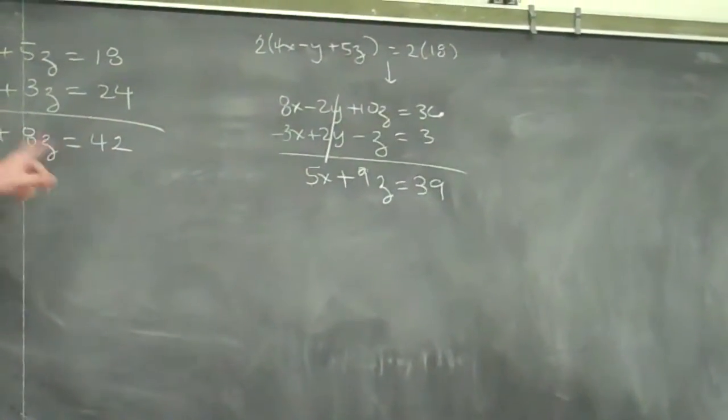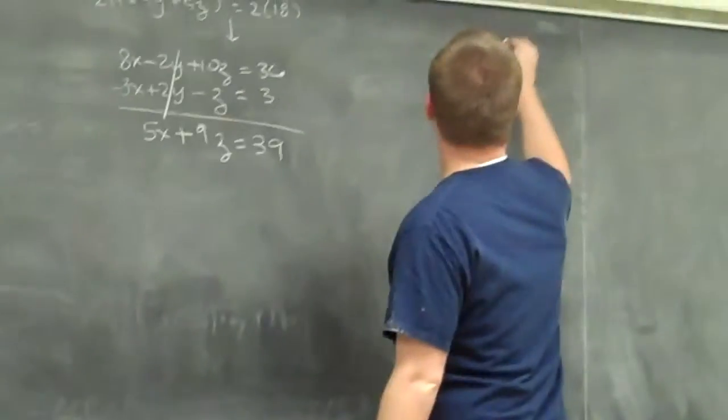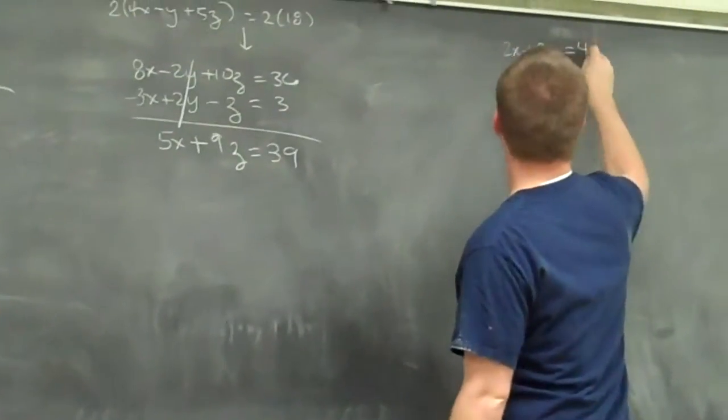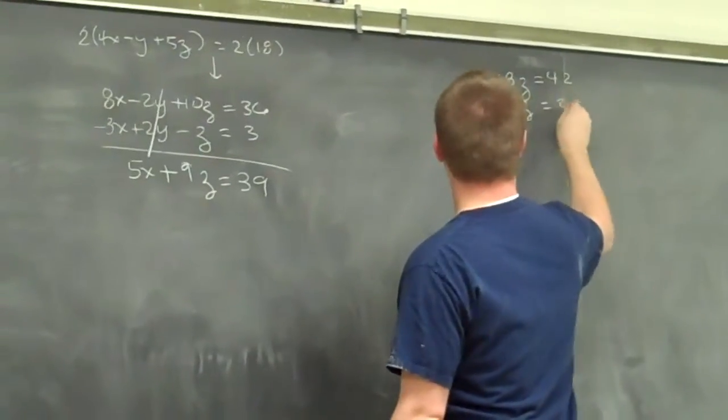So after eliminating y twice, I got two equations with x's and z's. I got 2x plus 8z equals 42, and I got 5x plus 9z equals 39.